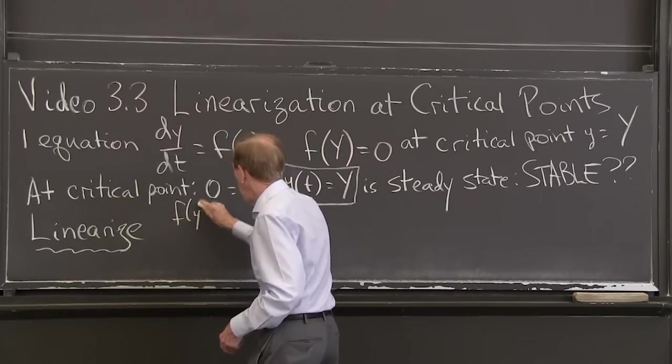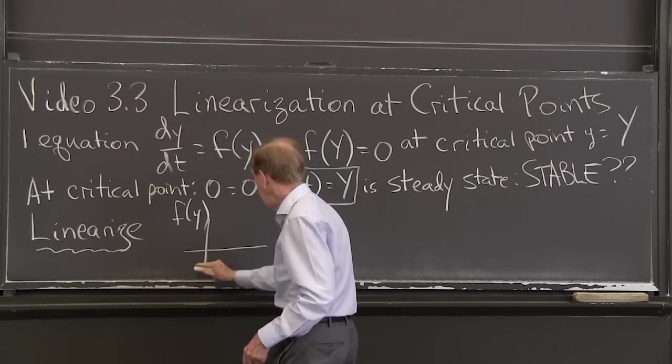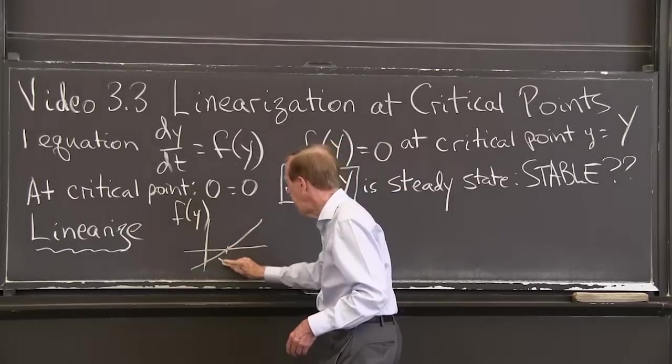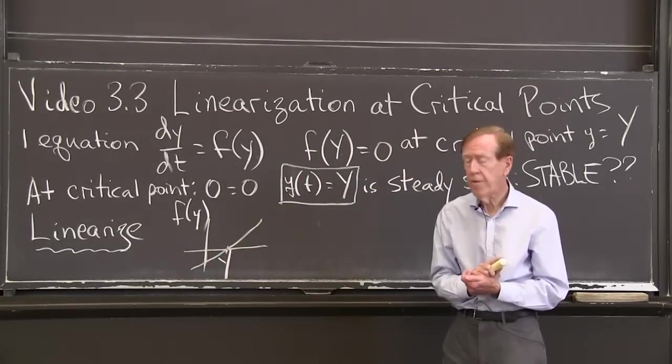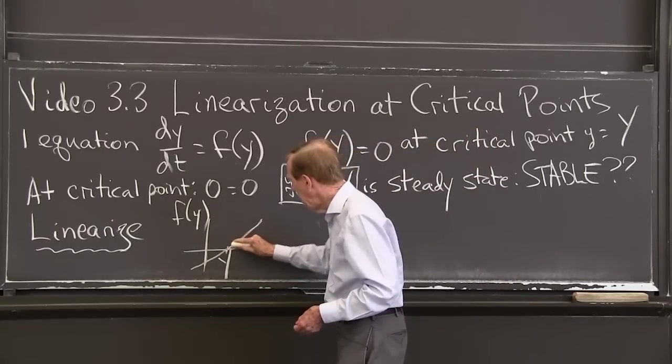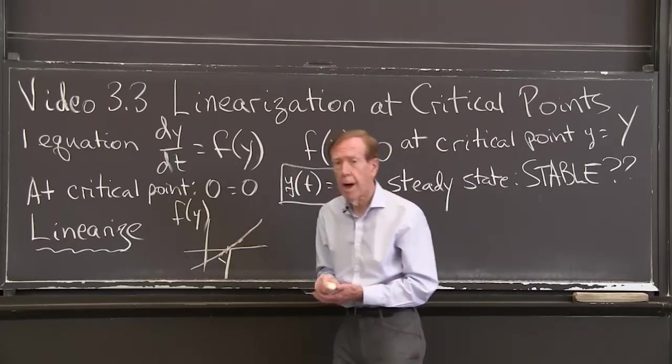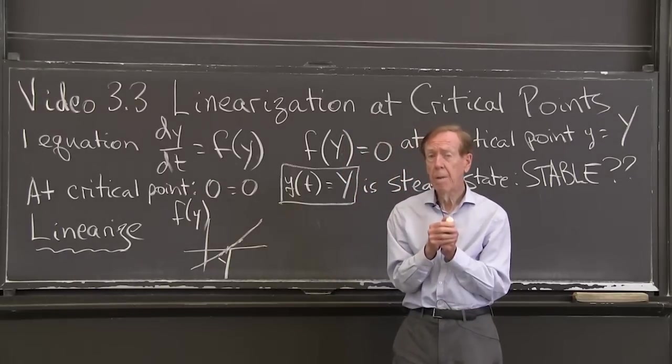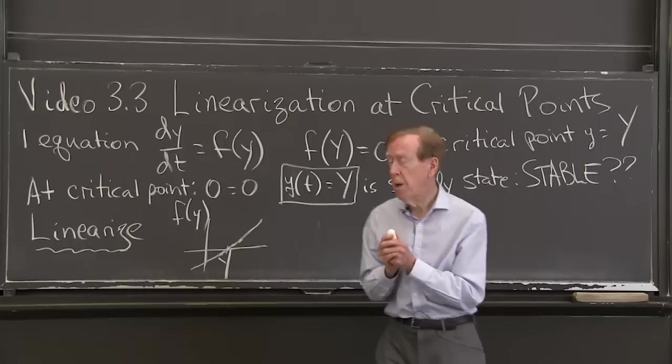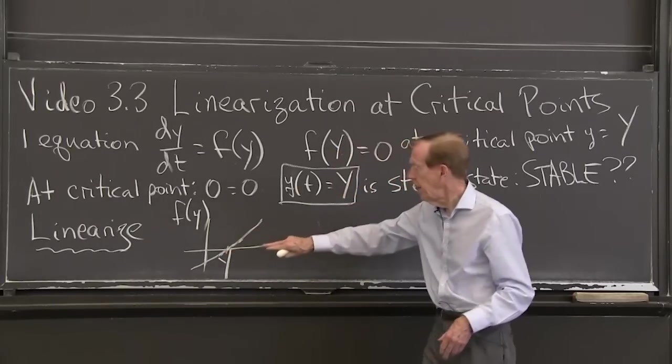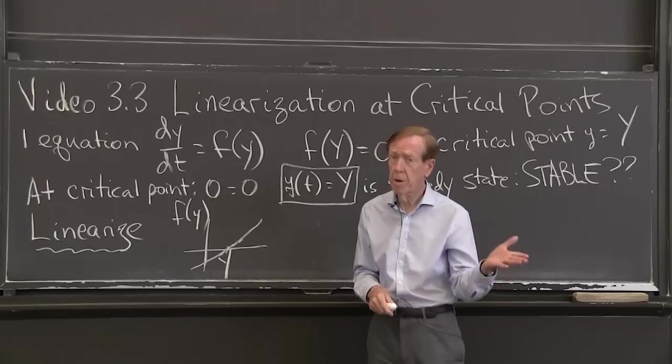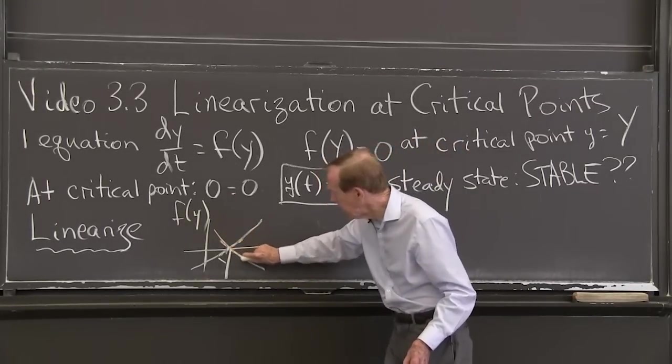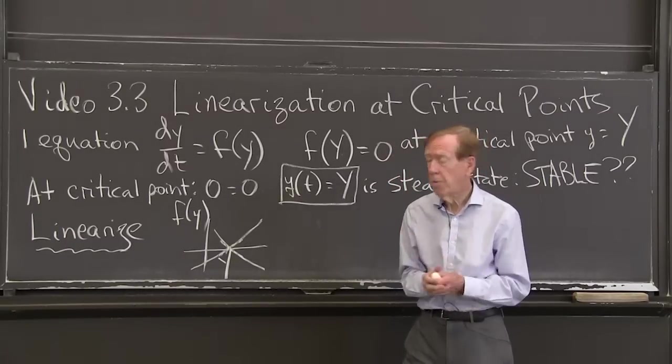Here is f of y. Here it's coming through. It's a graph of f of y, whatever it is. This we recognize as the point capital Y, right? That's where the function is zero. And near that point, my function is almost a straight line. And the slope of that tangent is the coefficient. And everything depends on that. Everything depends on whether the slope is going up like that—probably that's going to be unstable—or coming down. If it were coming down, then the slope would be negative at the critical point, and probably that will be stable.